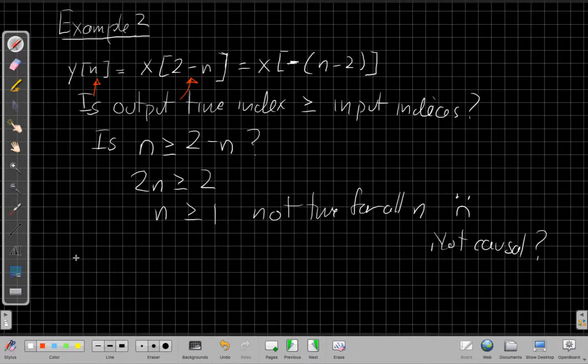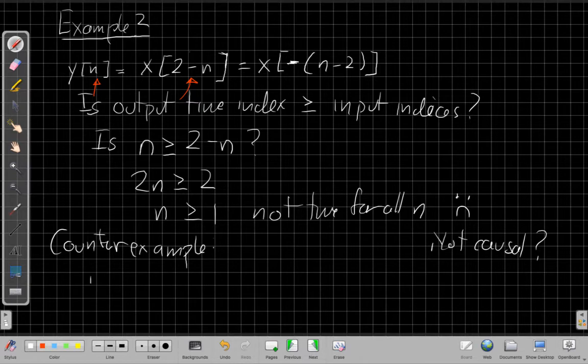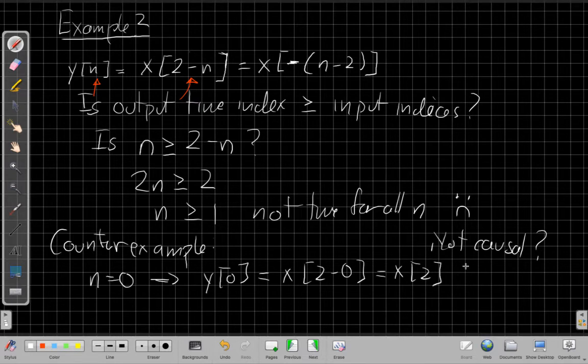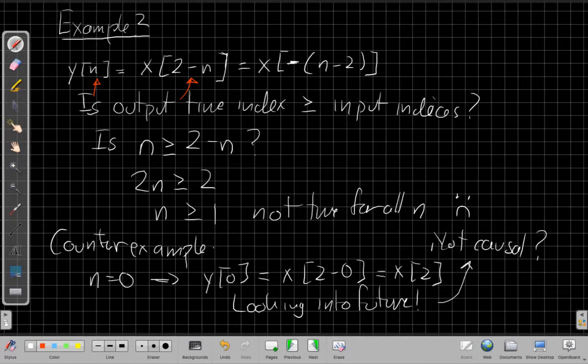This is the step-by-step approach. We can also very quickly show this isn't true using something called a counterexample. For a counterexample, we can just pick one example and show that it breaks the property. If I say n equals 0, then when n equals 0, I've got y of 0 is equal to x of 2 minus 0, which is x of 2. But now the output now is looking two samples into the future. That's not causal. This is looking into the future.